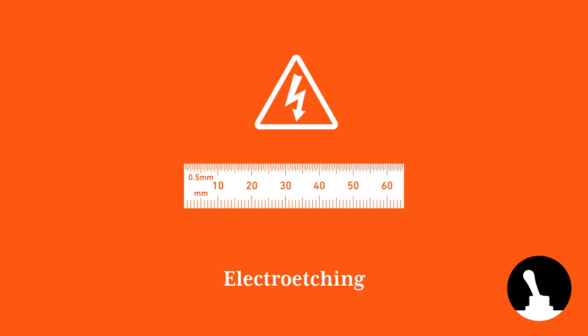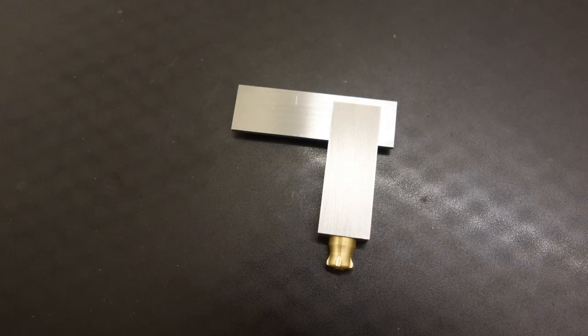Hello and welcome back to Switch and Lever. In this episode we're going to etch a ruler on the blade of the adjustable square we made in a previous video.